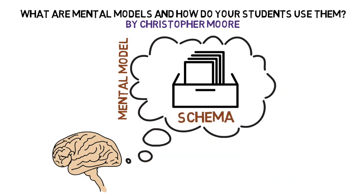These index cards hold information about past experiences, mental images of objects, results from past actions, and little files on more abstract knowledge like chemical reactions or English literature. We use these little index cards to tell us what to do or think when we encounter new stuff. They form the basis of our mental model of the world.